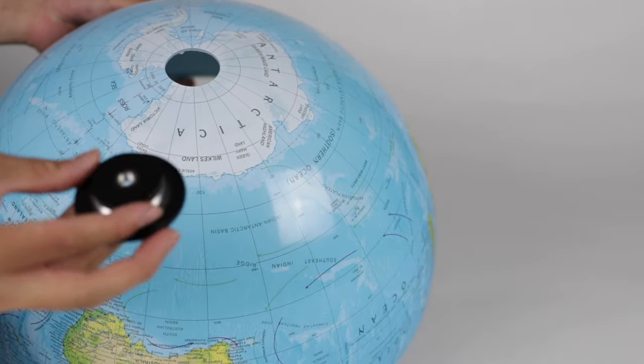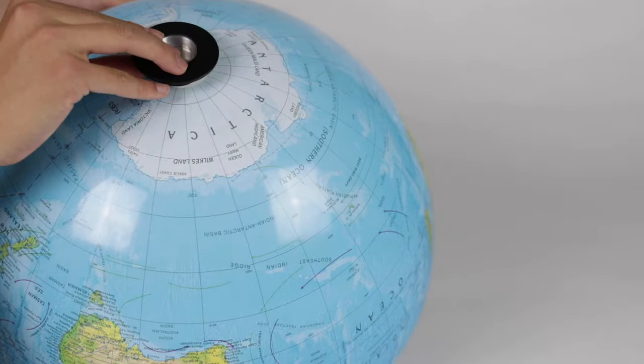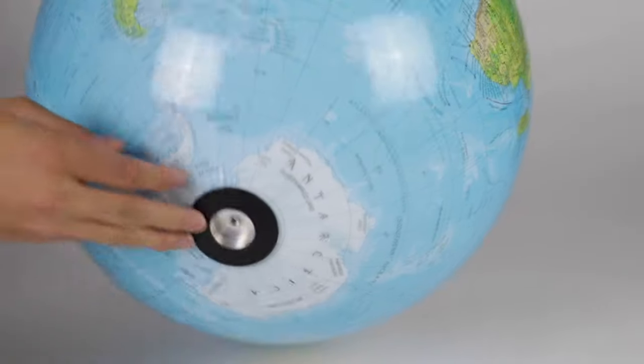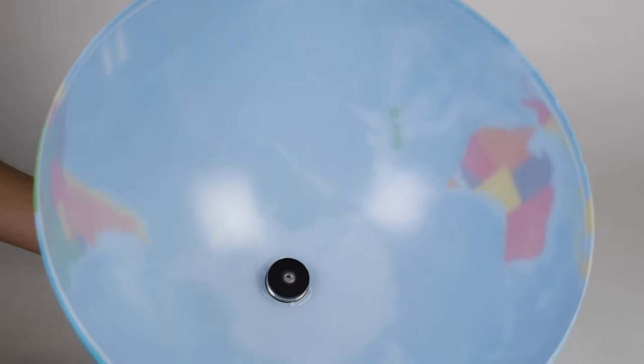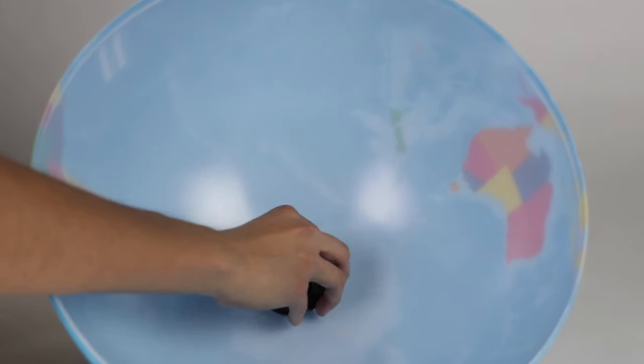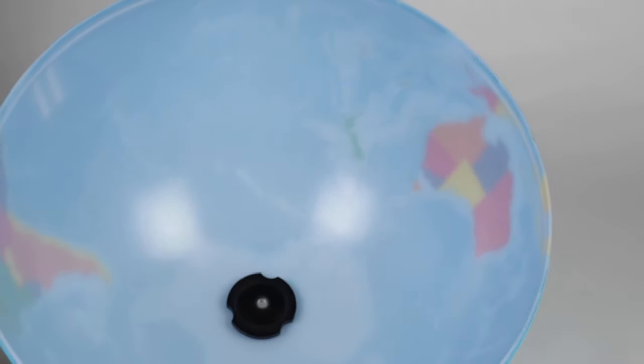Place Part D into the hole from underneath the bottom of the southern hemisphere. Place Part C on top from inside the hemisphere and then use Part W to screw the pieces together.